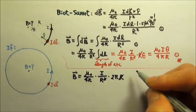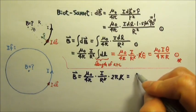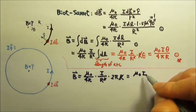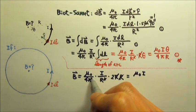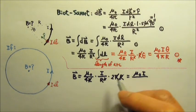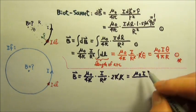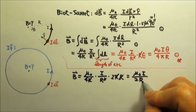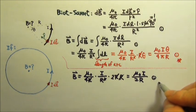And again, one of the Rs would cancel. So we get mu naught I, oh, the π cancel also. And then would divide by 2R because it's 4 and 2 right there. So it's 2R and out of the paper.